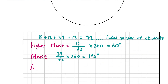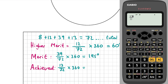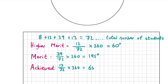Finally we do the same thing for achieved. 13 students achieved a grade of achieved, so it's 13 over 72 multiplied by 360, and that gives us 65 degrees for achieved.